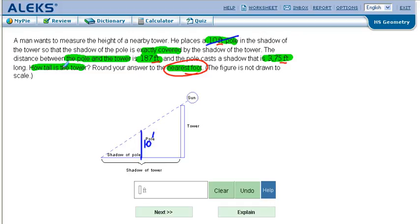And they overlap. And so it says the distance from the pole to the tower, so be very careful. This right here only from the pole to the tower is 187 feet.